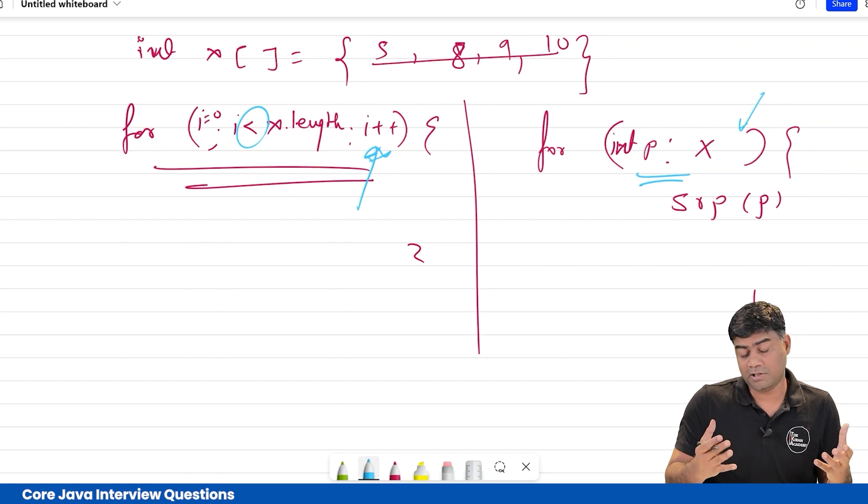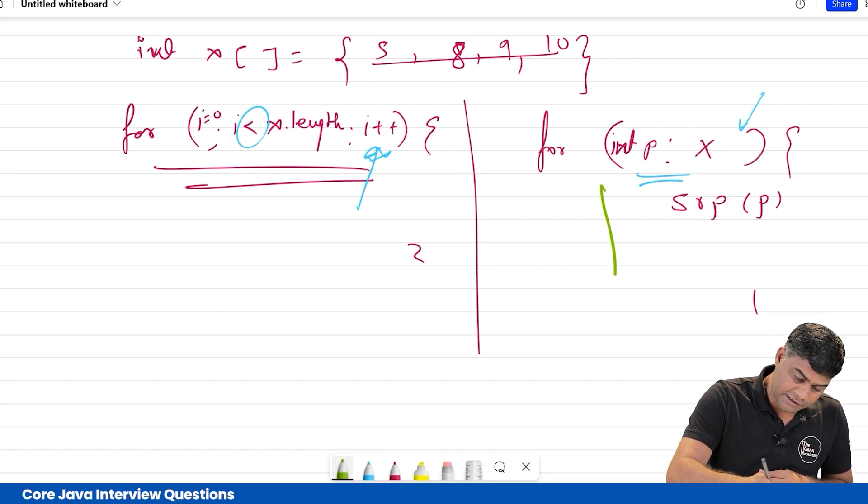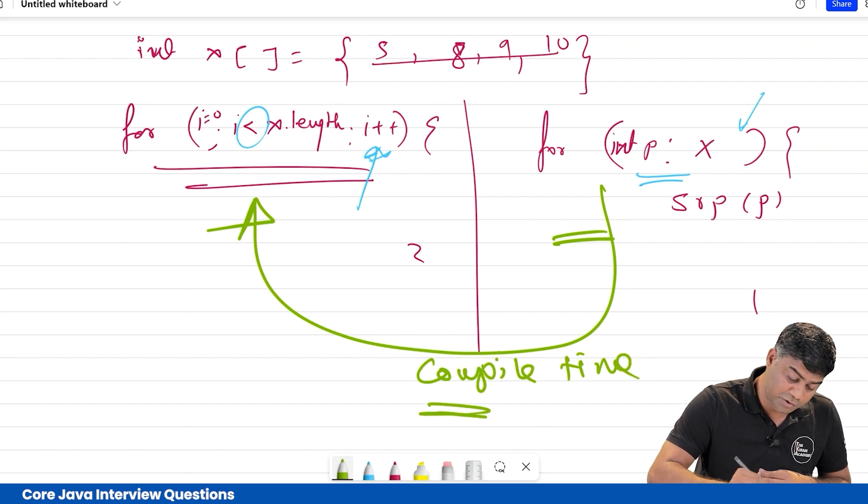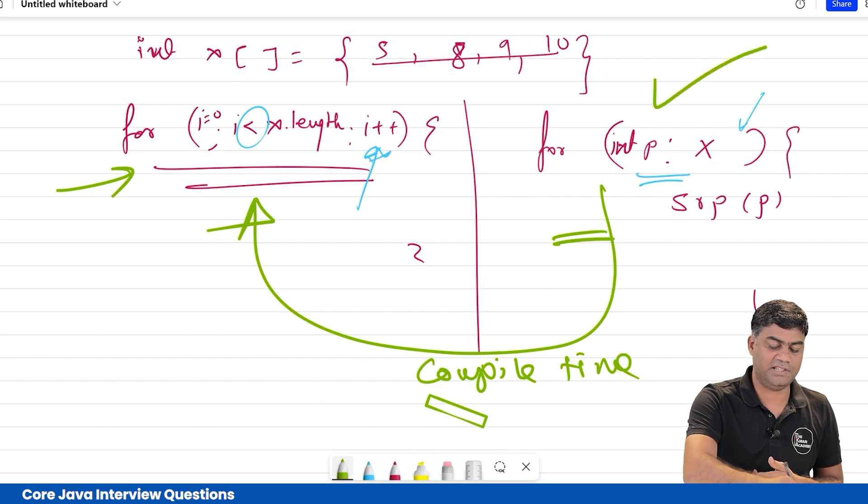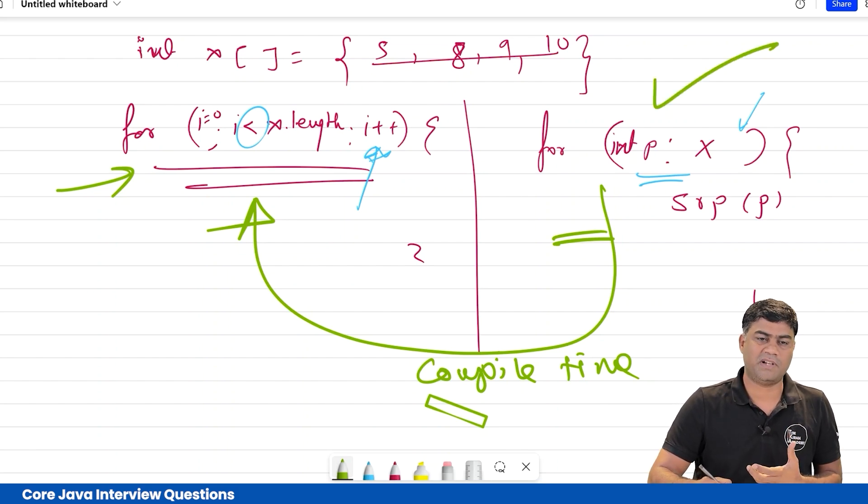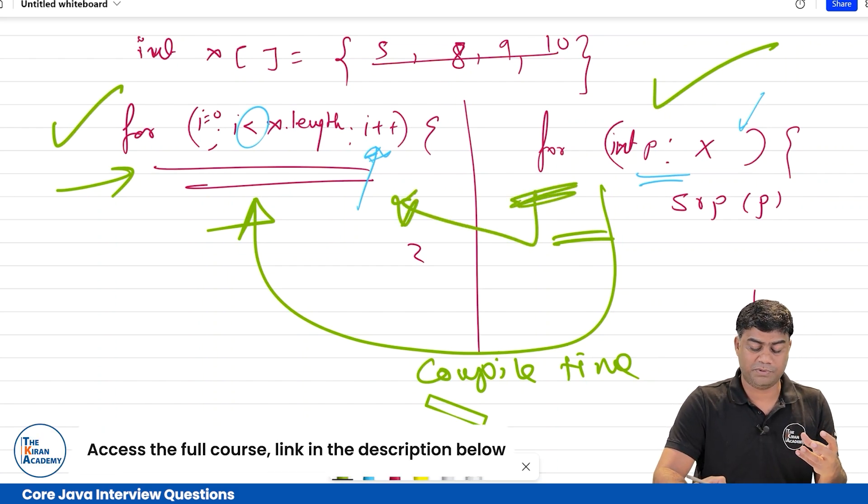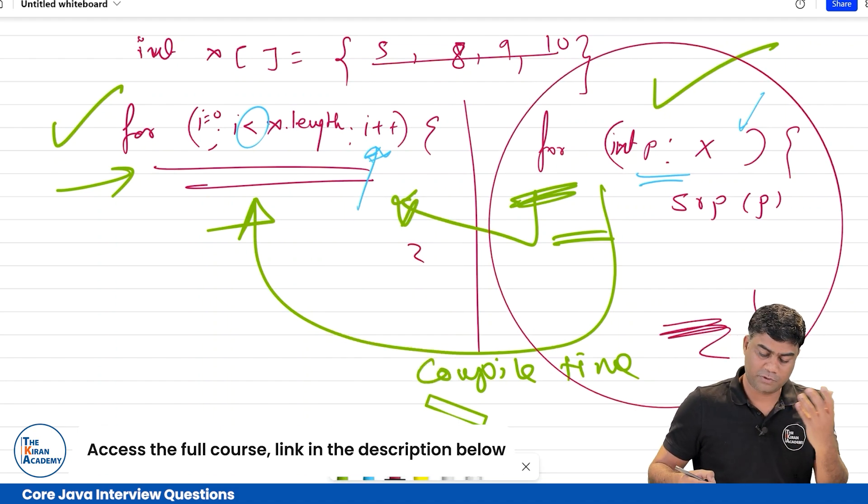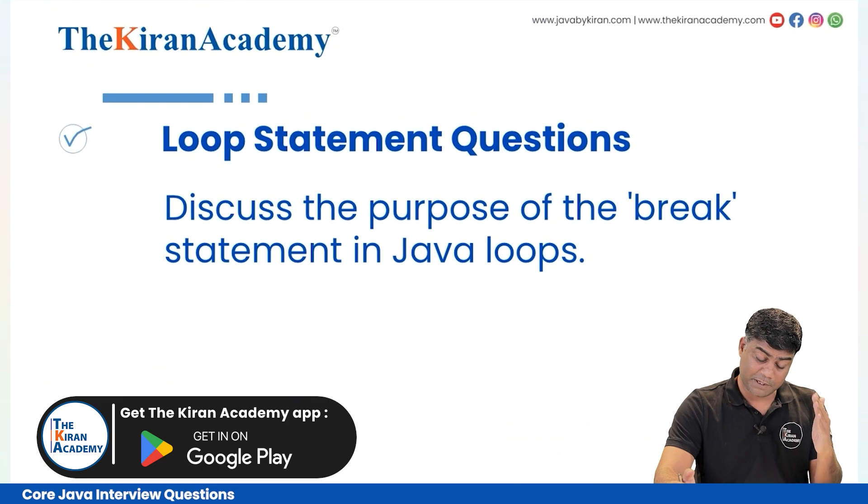This for-each loop at compile time converts into this regular for loop. So if someone asks performance-wise which is faster, the answer is the regular for loop, because the for-each loop needs to get converted into the widely used for loop. Just remember the difference between these two. Next question: discuss the purpose of break statement in Java.